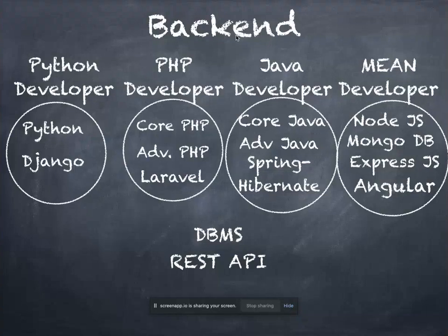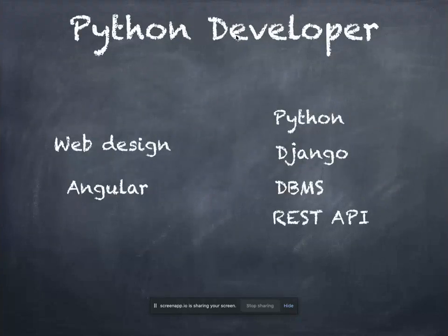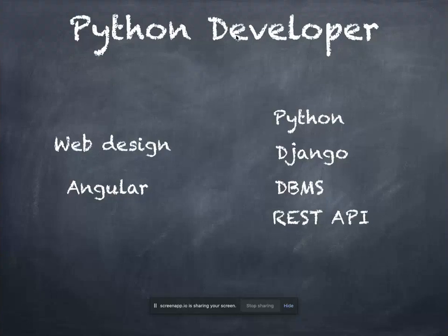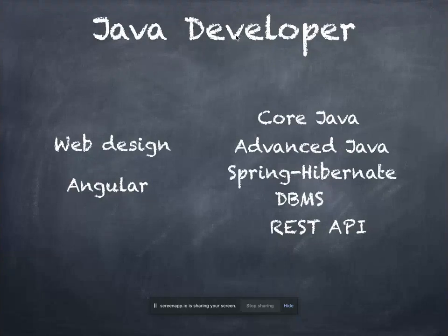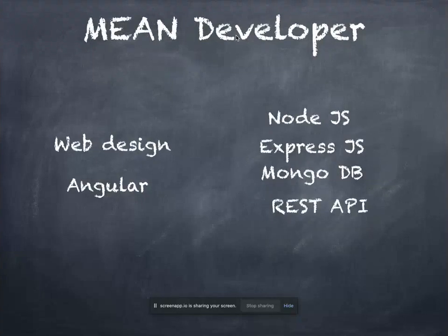When selling courses to students, we package them as PG (Post Graduation) developer courses. A Python Developer PG course includes front-end technologies — Web Design and Angular — plus back-end: Python, Django, DBMS, and REST API. PHP Developer PG includes Web Design, Angular, Core PHP, Advanced PHP, Laravel, DBMS, and REST API. Java Developer PG includes Web Design, Angular, Core Java, Advanced Java, Spring, Hibernate, DBMS, and REST API. MEAN Stack Developer includes Web Design, Angular, Node.js, Express.js, MongoDB, and REST API.